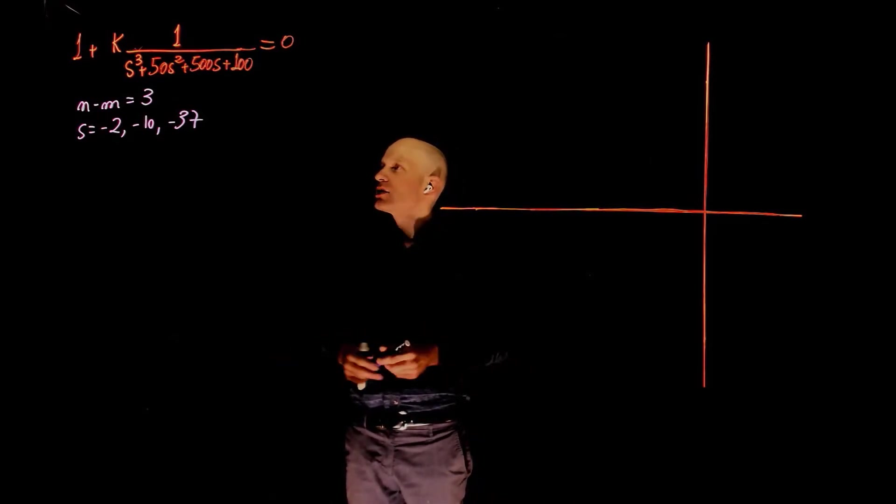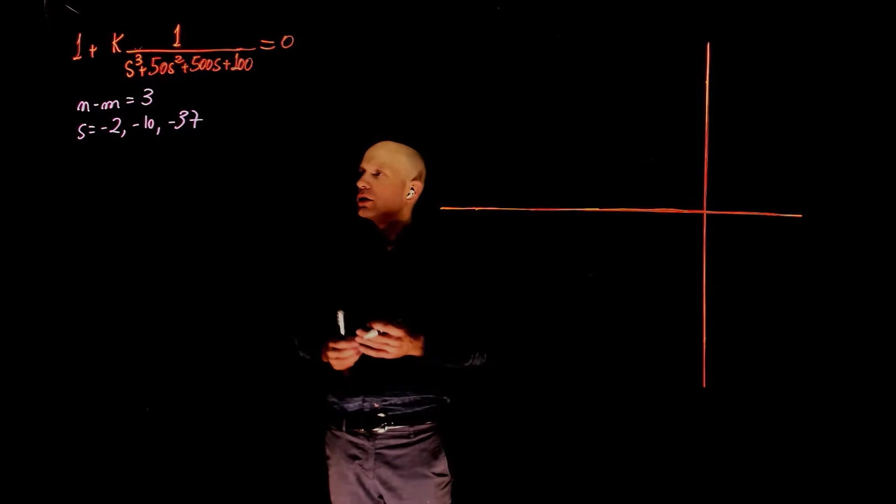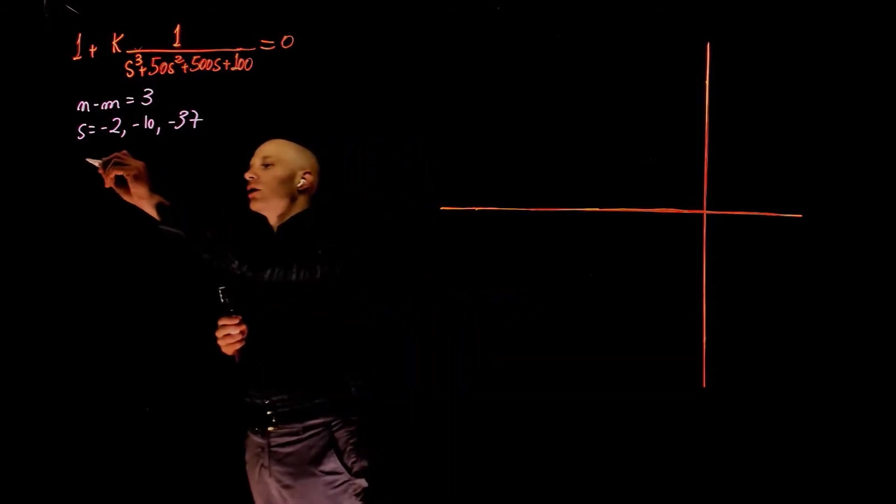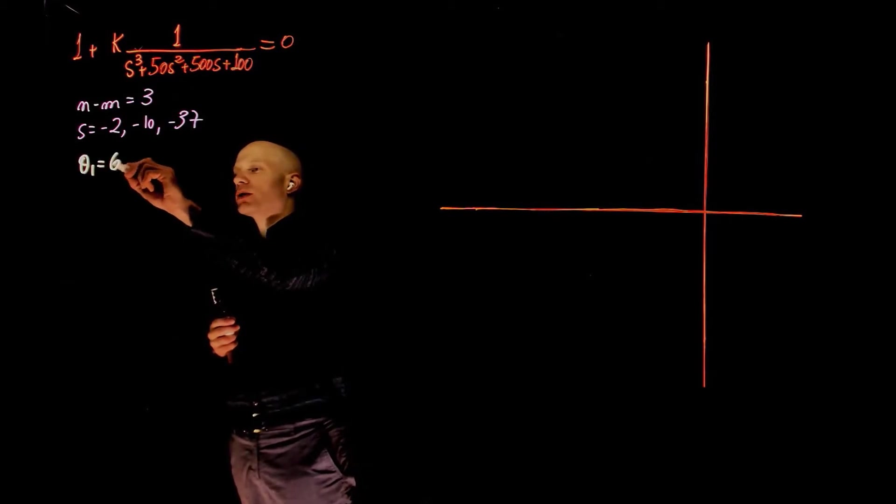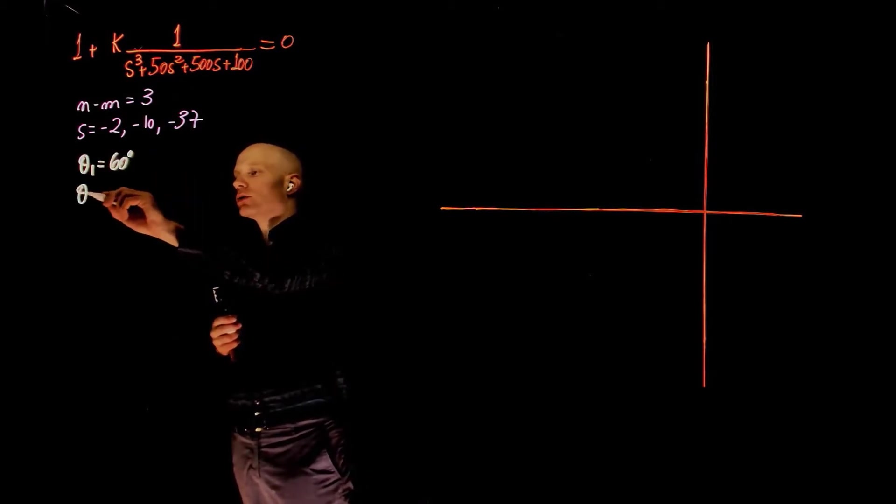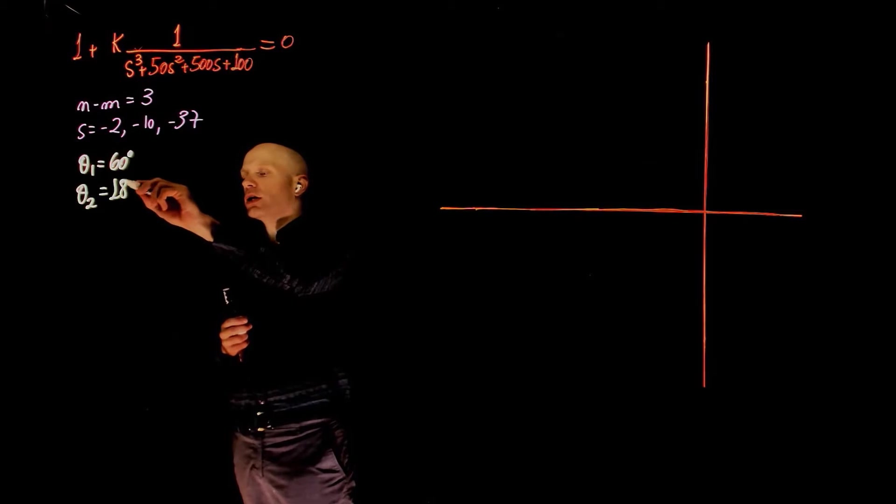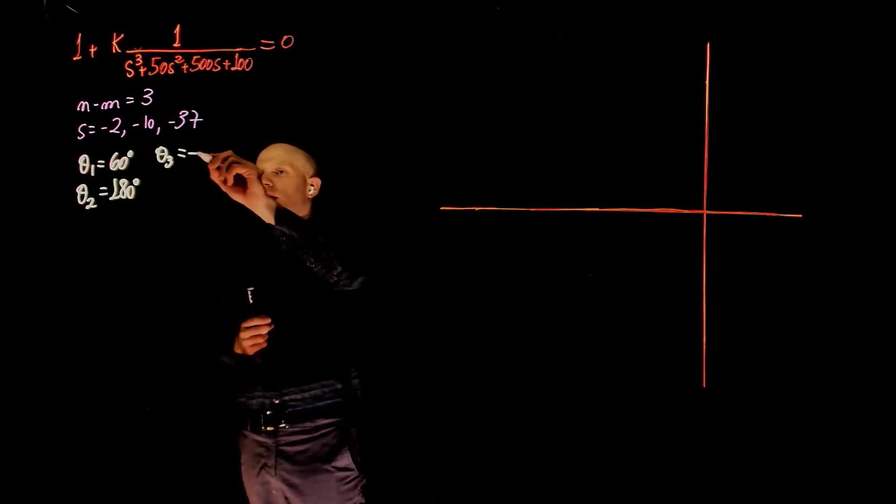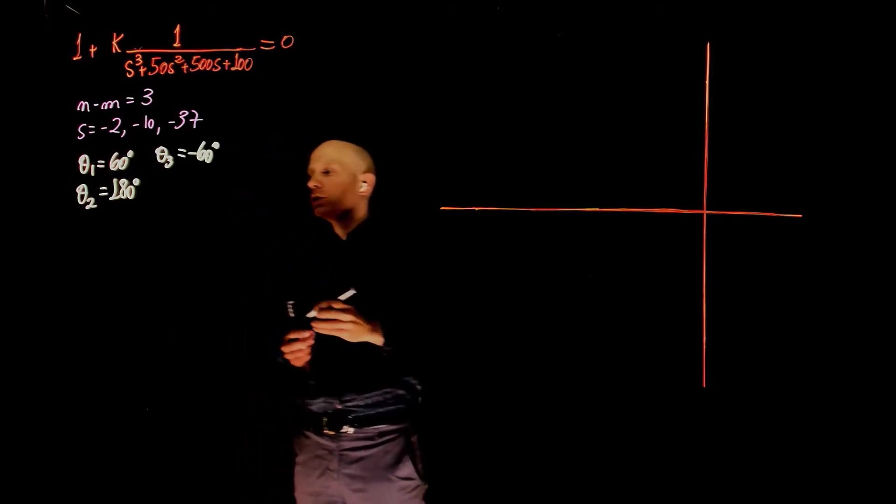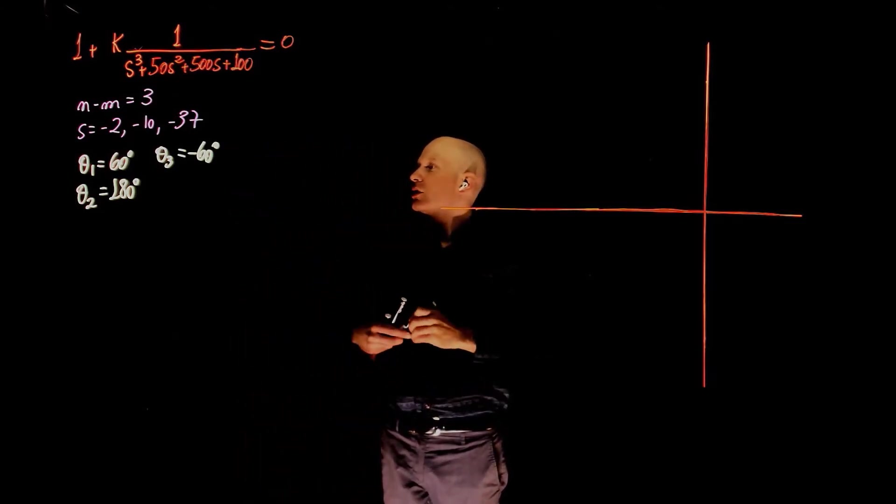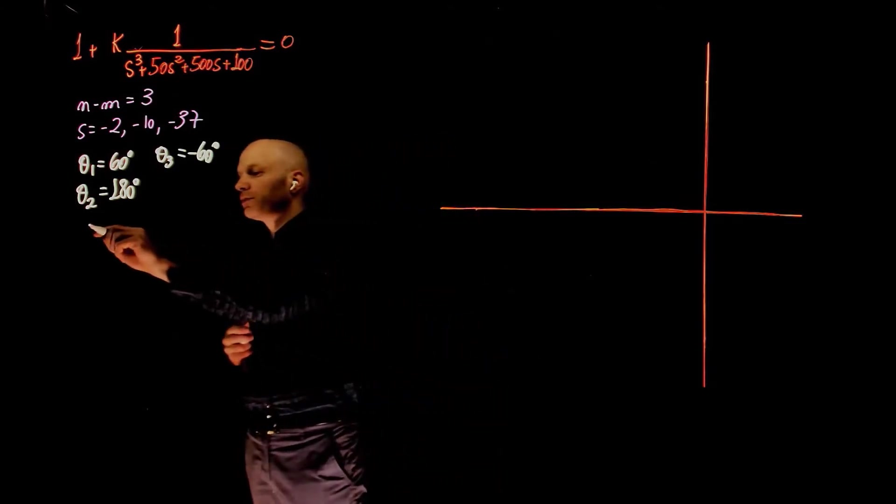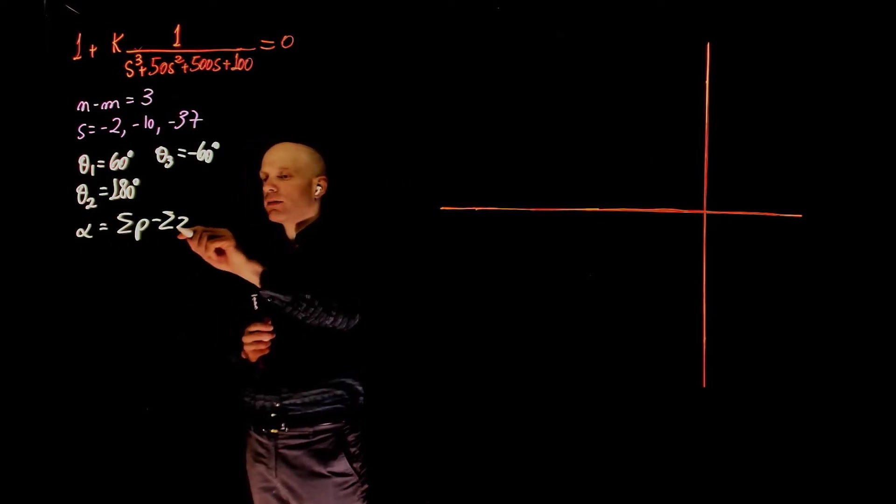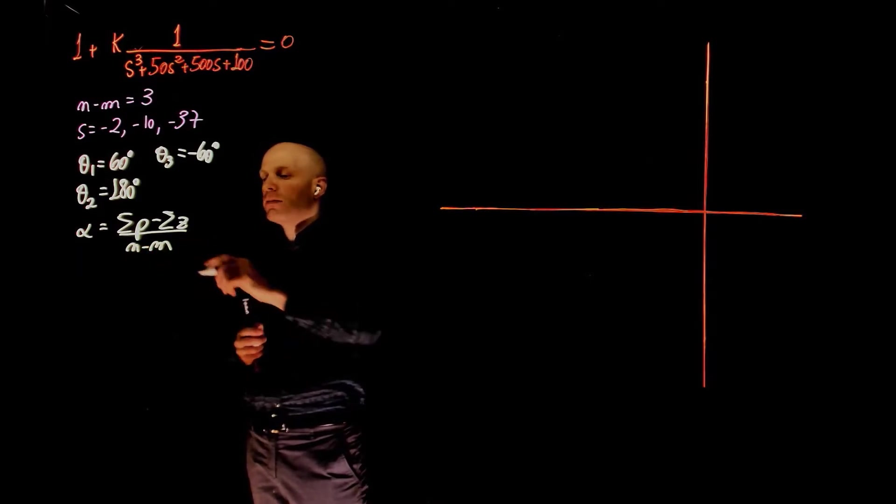When you have an excess of three poles, we know that these poles go to infinity following asymptotes, and the angle of those asymptotes are theta 1 equals to plus 60 degrees, theta 2 is 180 degrees, and theta 3 is negative 60 degrees or 300 degrees. The centroid of these asymptotes is calculated as the sum of poles minus the sum of zeros divided by n minus m.